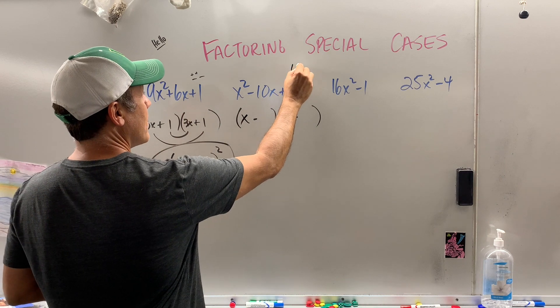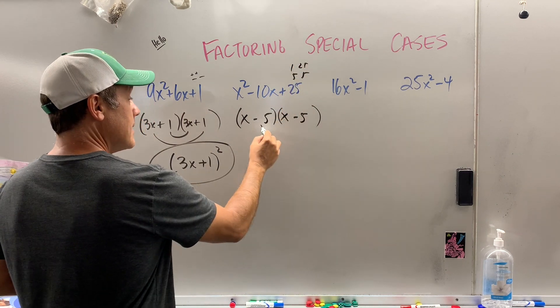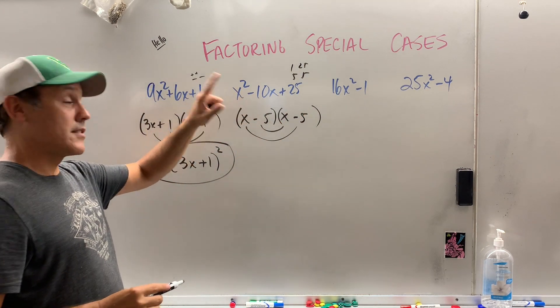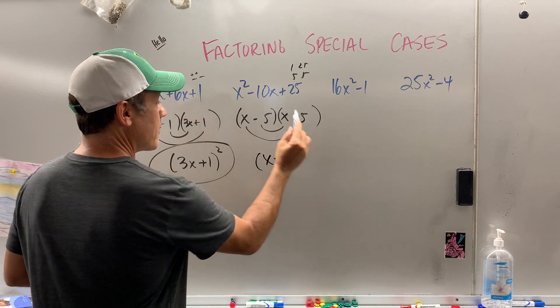Factors of 25: 1 and 25, 5 and 5. I'm going with 5 and 5. Negative 5x take away 5x is negative 10x. We knocked it out of the park. Let's be profesh and write it like that.